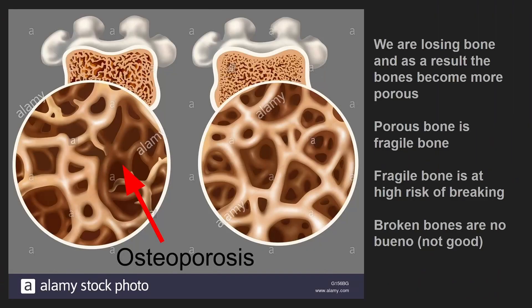But really quickly, the idea of osteoporosis is that we are losing bone, and as a result, the bones become more porous as shown here. Porous bone is fragile bone. Fragile bone is at high risk of breaking, and broken bones are no bueno.